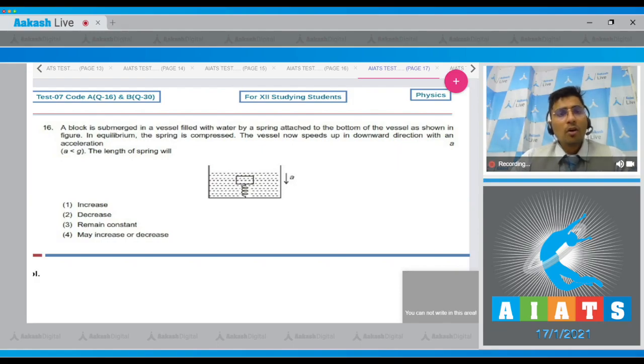In question 16, a block is submerged in a vessel filled with water by a spring attached to the bottom of the vessel as shown. In equilibrium, the spring is compressed. The vessel now speeds up in the downward direction with an acceleration a which is less than g. You have to find out the length of the spring now.